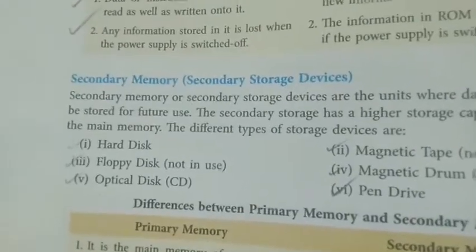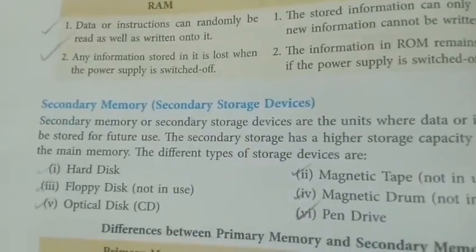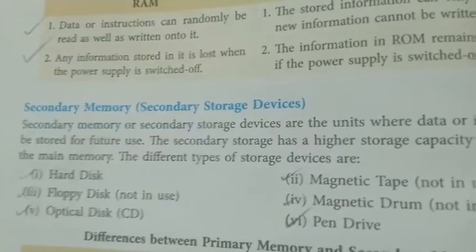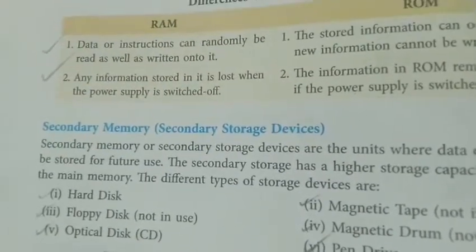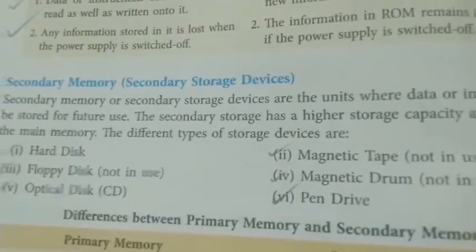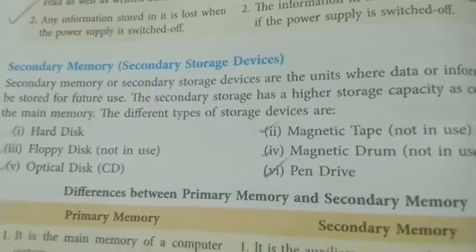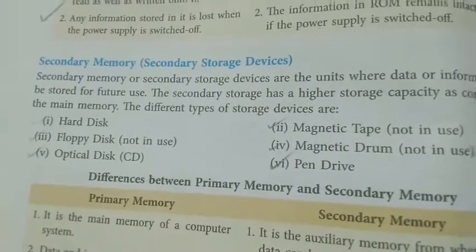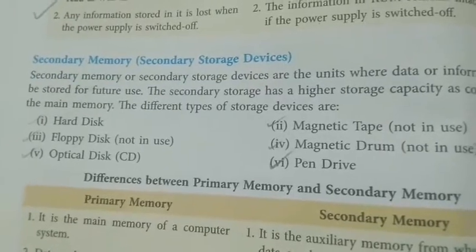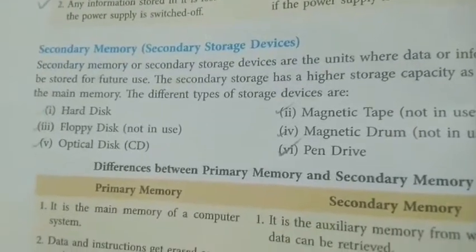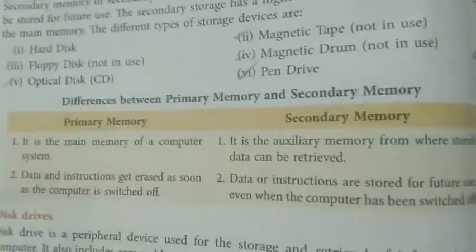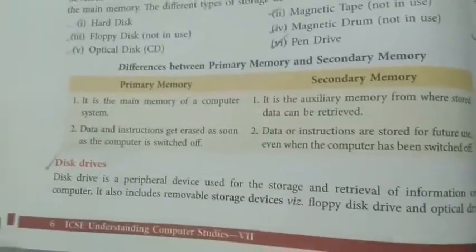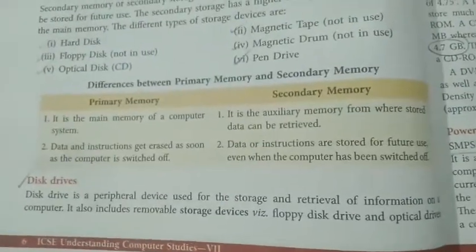Secondary memory, also called secondary storage, is where data or information is stored for future reference. Users have direct access to devices like hard disk, magnetic tape, floppy disk, magnetic drum, optical disk (CD or DVD), and pen drive. Out of these six devices, nowadays only the hard disk, optical disk, and pen drive are commonly used — the others have become outdated. The differences between primary and secondary memory are given and are important from an exam point of view.